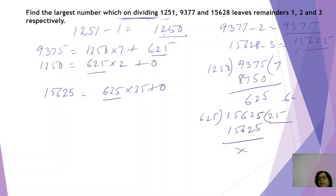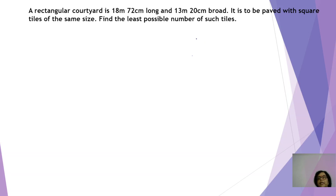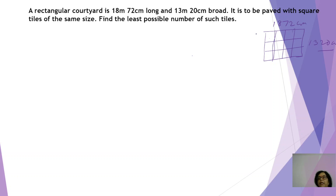So here the key word was 'on dividing', which must be taken into account. Moving on to the next question: a rectangular courtyard is 18 m 72 cm long and 13 m 20 cm broad. It is paved with square tiles of the same size. Find the least number of tiles needed. The length of the courtyard is 1872 cm and the width is 1320 cm. To find out the size of each tile, we need to find the common factor — the HCF — between these two numbers, the length and the breadth.